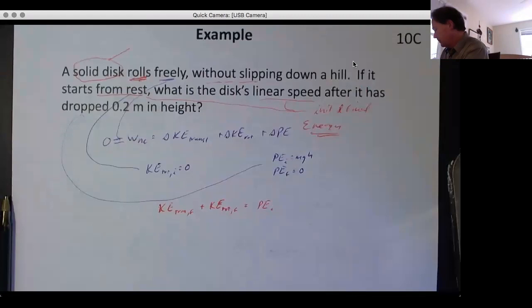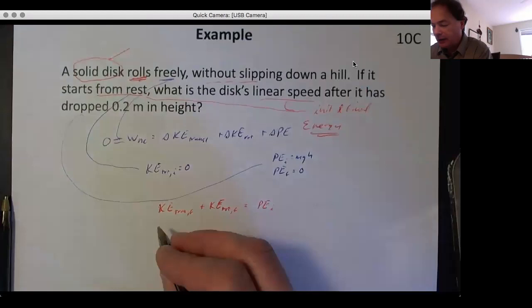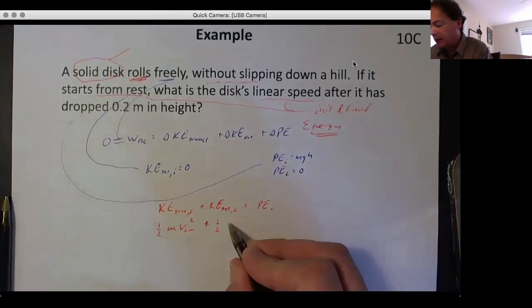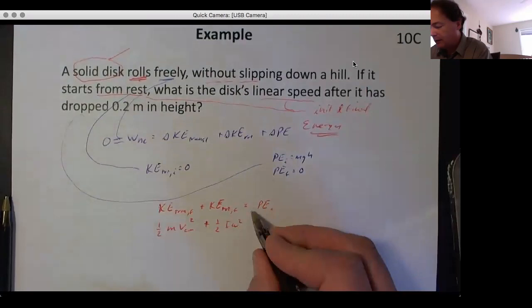that's the translational part, plus ½Iω², and this is still equal to our mgh we took from up there. We can do the same trick as I did before: